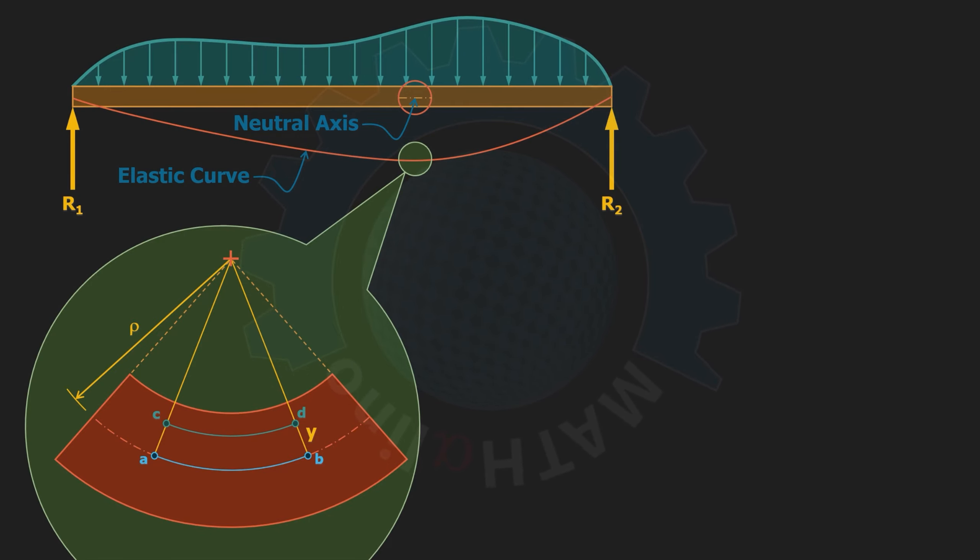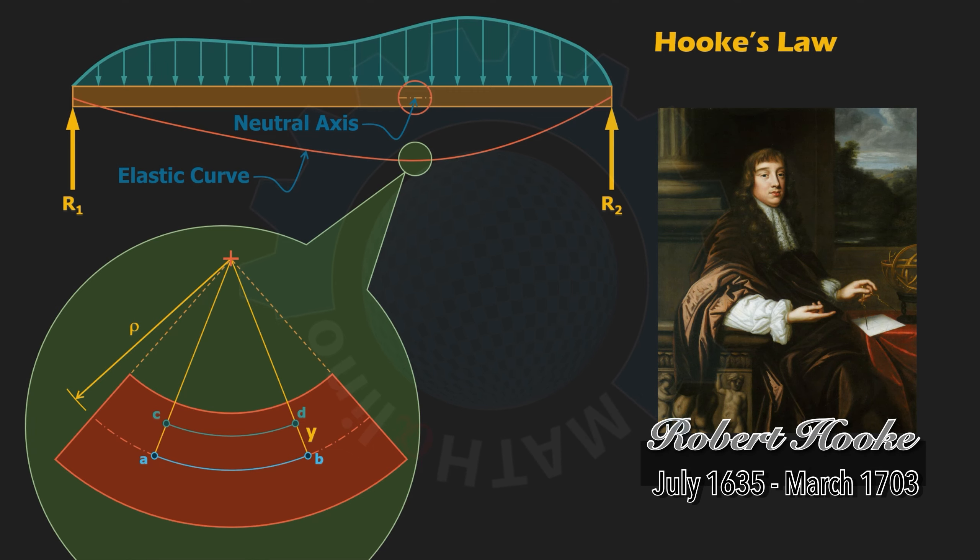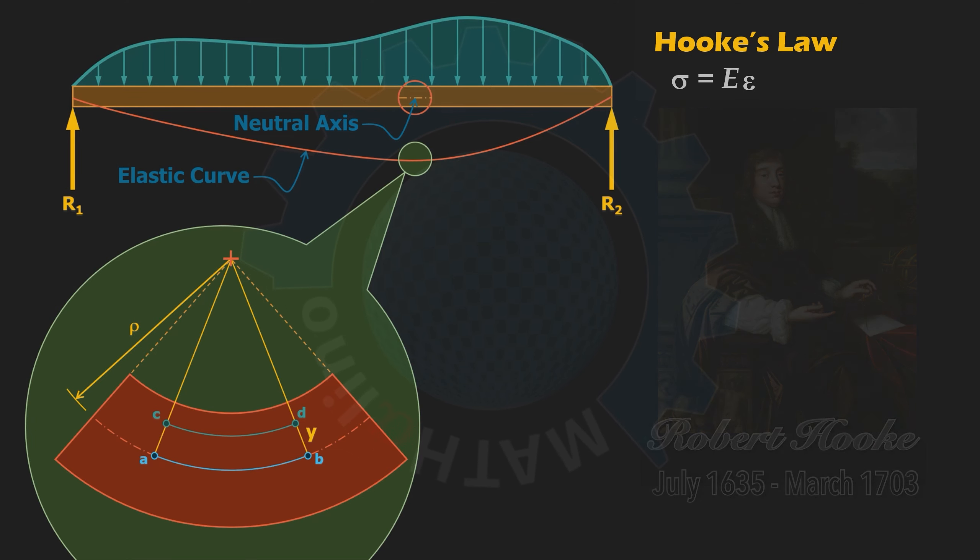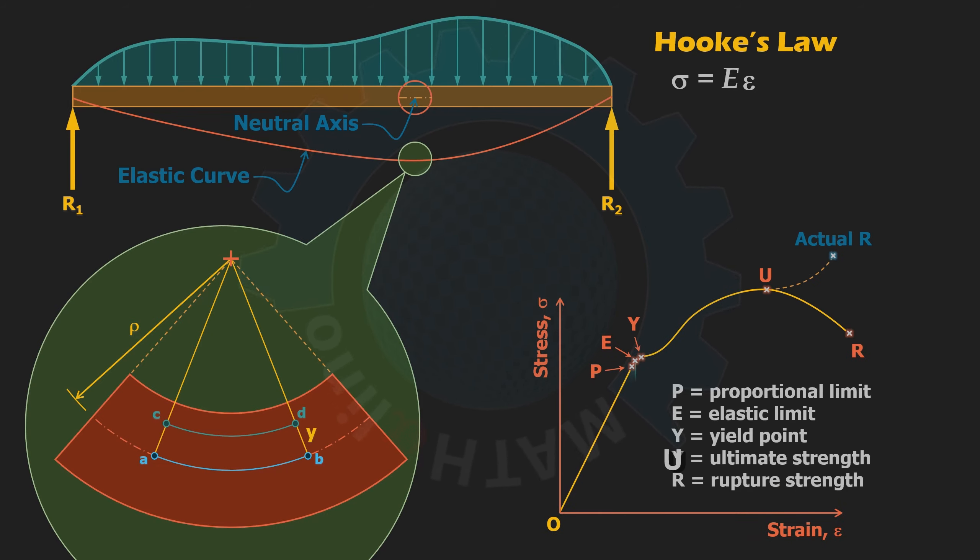With all this visualization in place, we will now dive deeper to the derivation. Assumption number four states that the material must obey Hooke's law. In 1678, the English scientist Robert Hooke postulated that stress is proportional to strain. It has been proven to be true within the elastic region up to the proportional limit. The constant of proportionality is the slope of the straight line from O to P. We call it the modulus of elasticity or the Young's modulus and it is denoted by E.